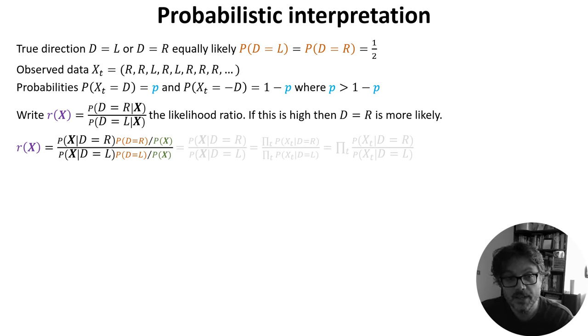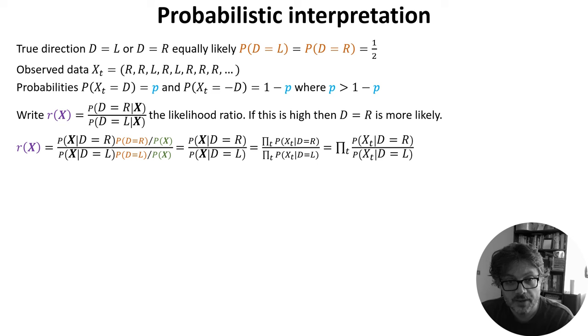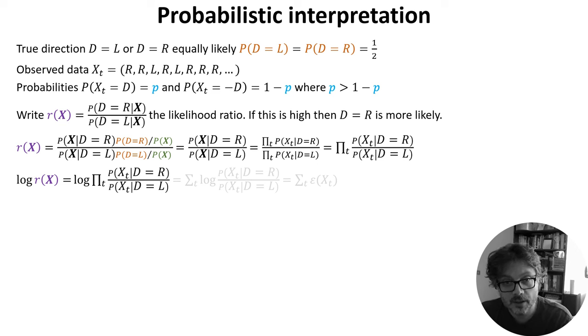We use Bayes' theorem to rewrite the probability that d equals R given x in terms of the probability of x given d equals R, times the probability d equals R, divided by the probability of x, and the same thing for the probability that d equals L on the bottom. The P(x) cancels, and both the prior probabilities d equals R and d equals L are both a half, so they cancel too. The observations at different time points are independent, so we can expand these as a product of the probabilities at each time point, and this product is the same at the top and bottom so we can pull it out. Now to see what's going on more clearly, we take the log of this ratio to get the log likelihood ratio. The log of our product is the sum of the logs, and we'll write the individual terms as the evidence at time t, epsilon(x_t).